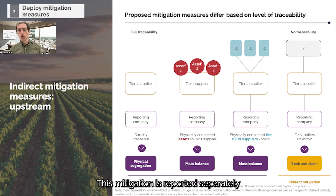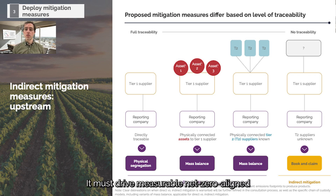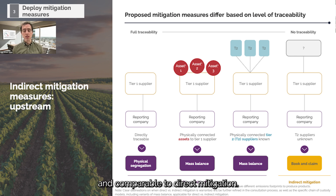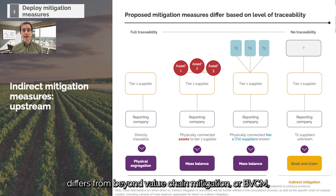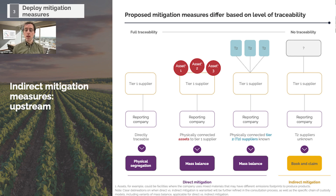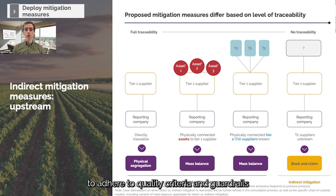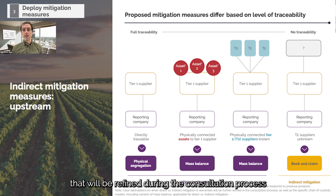This mitigation is reported separately from direct mitigation. It must drive measurable net-zero aligned transformation that's relevant to a company's value chain and comparable to direct mitigation. It's important to note that indirect mitigation differs from Beyond Value Chain Mitigation (BVCM), which contributes to global climate mitigation for activities not associated with the value chain. Indirect mitigation measures are expected to adhere to quality criteria and guardrails that will be refined during the consultation process to ensure their integrity and effectiveness.